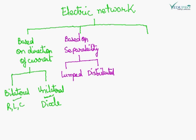Based on separability, there are two types of network: lumped and distributed. In lumped network, the elements can be separated physically from each other. Whereas in distributed networks, the elements such as resistances, capacitances, inductances are not physically separable from each other, as in case of transmission lines.